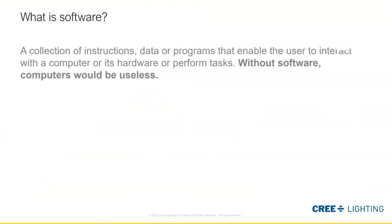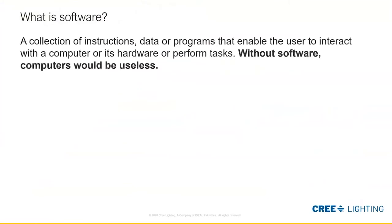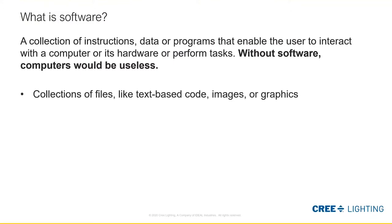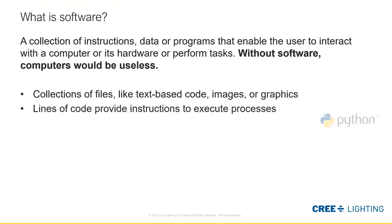So here's a quick crash course in software, APIs, and what drives it. First, let's define what software is. Software is really just a collection of data, information, and instructions that helps a computer or its hardware perform a specific task. Without software, a computer or any smart device would basically be useless. Software is a collection of information or data — this could be text-based code, images, or graphics. Lines of code simply tell a computer or software program what to do to execute a certain process. You may have heard of Python, C++, or Java as examples of coding languages.